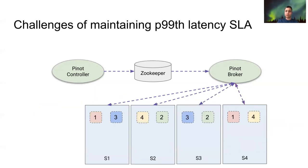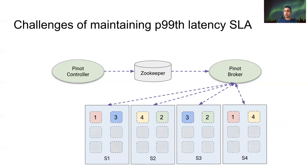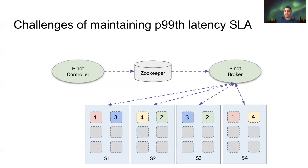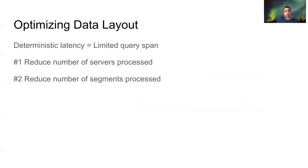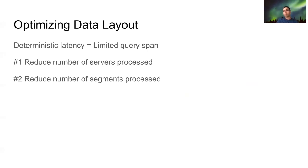In a similar vein, you might end up with a lot of segments per server, so each server has to do a lot of work to execute the local query. In this case, it will not only increase the P99 latency but latencies across the board. The general approach for getting more predictable latency is to limit the query span — to limit the number of things we need to process to execute the query. The two approaches are: reduce the number of servers processed, and reduce the number of segments processed. These approaches are complementary to each other.